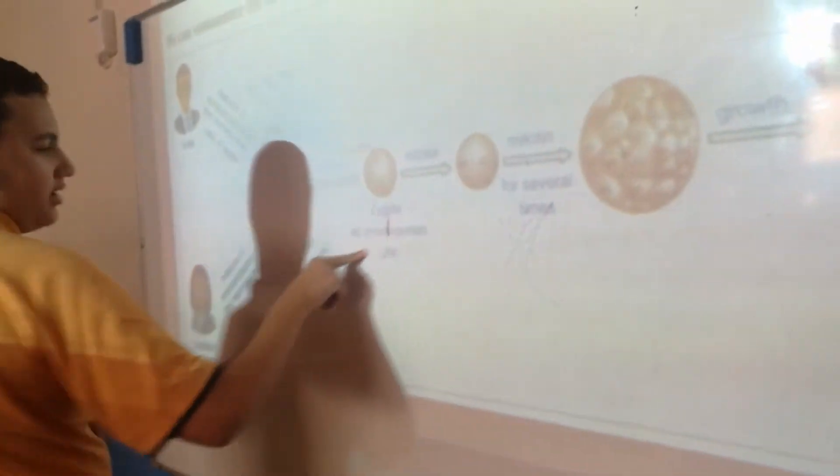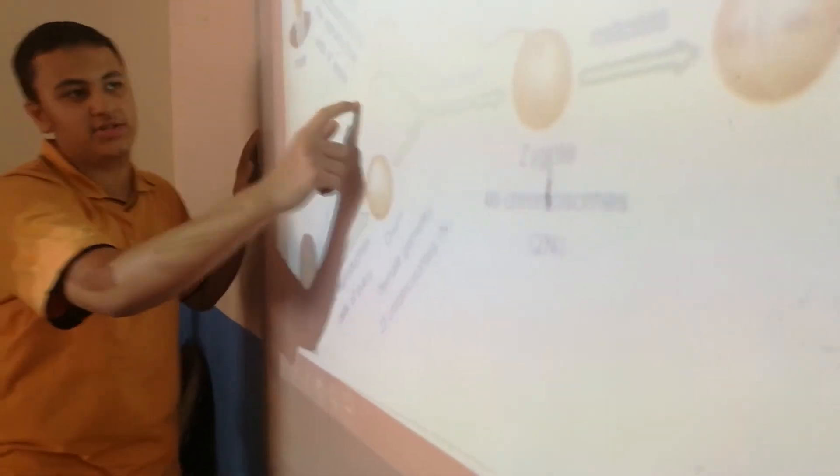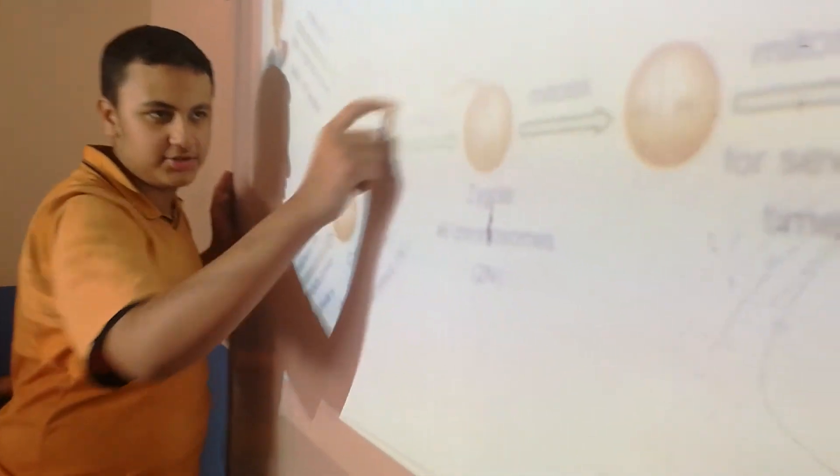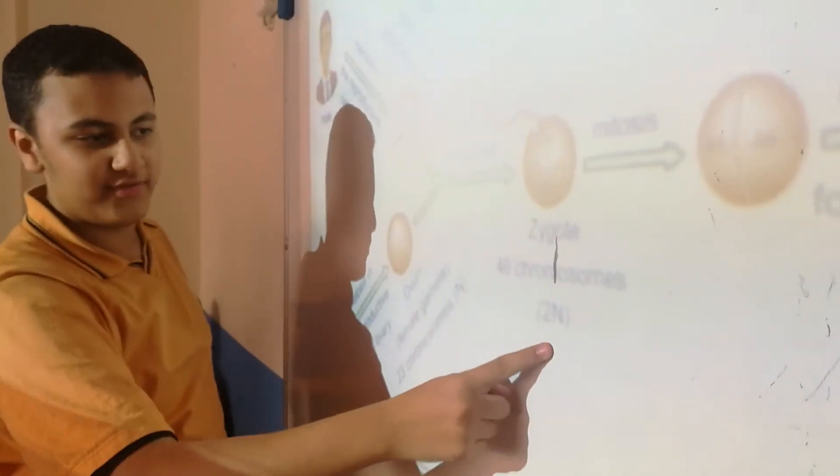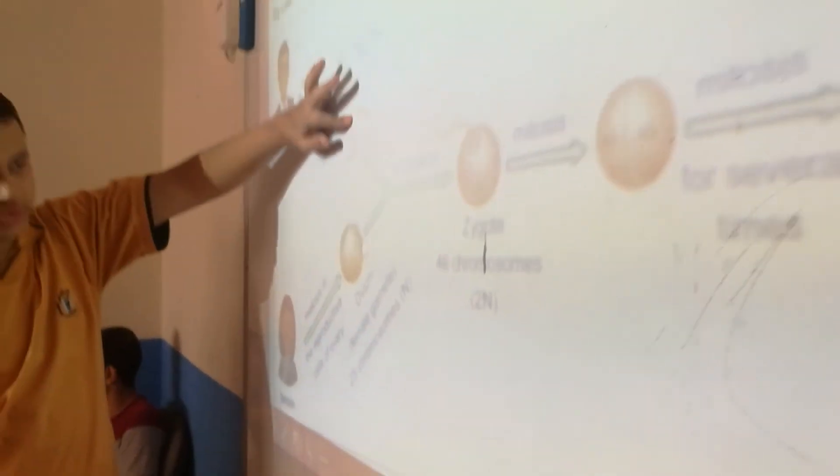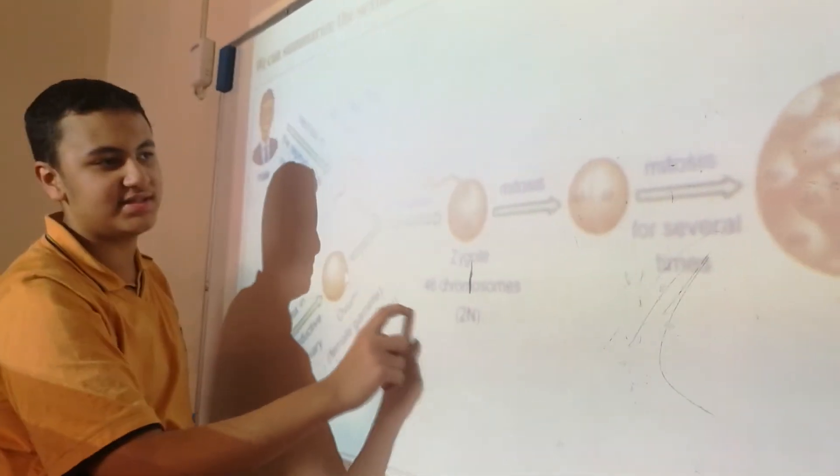Here we have meiosis. We said that we have female gametes which is called ovum, we have male gametes which is called sperm. The fertilization process here, you can see sperm fertilizes ovum. We have 23 chromosomes here, 23 chromosomes. The zygote has 46 chromosomes. Now concentrate in the...